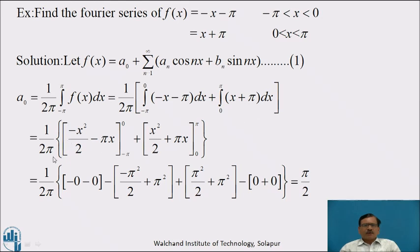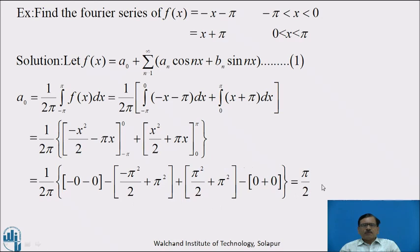Let f(x) equal to a naught plus summation of n equal to 1 to infinity of aₙ cos(nx) plus bₙ sin(nx) — equation number 1. We have a naught equal to 1 by 2π integration from minus pi to pi of f(x) dx, which equals 1 by 2π: first taking limit minus pi to 0 with f(x) equal to minus x minus pi dx, plus limit 0 to pi with f(x) equal to x plus pi dx. Integrating gives minus x square by 2 minus πx with limit minus pi to 0, plus x square by 2 plus πx with limit 0 to pi. Putting the limits and simplifying, we get a naught equal to pi by 2.